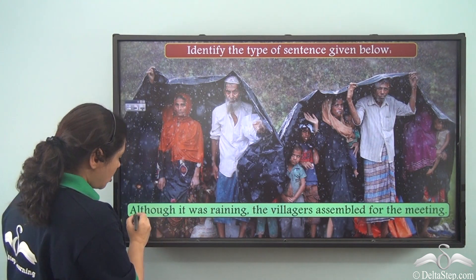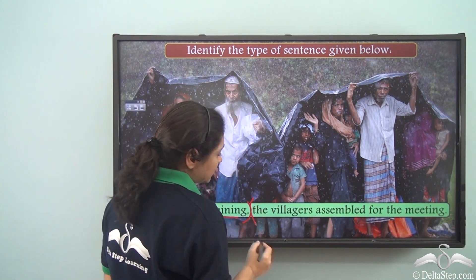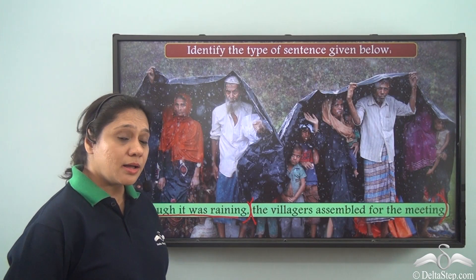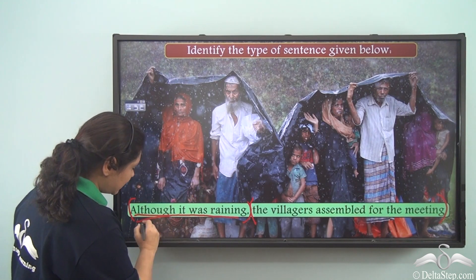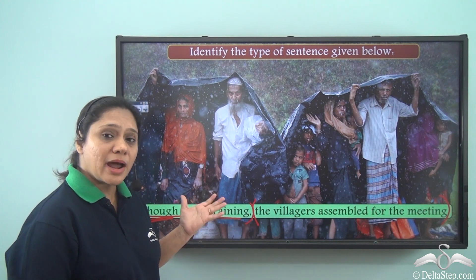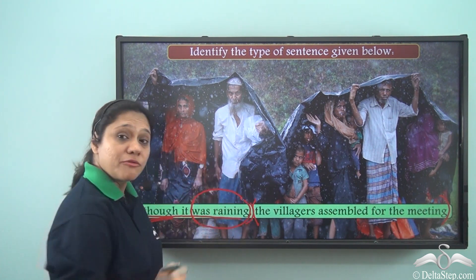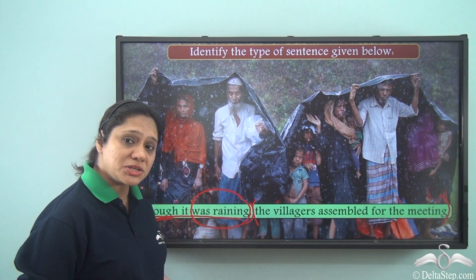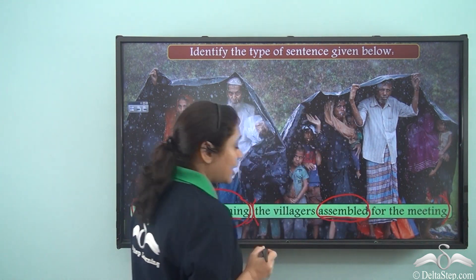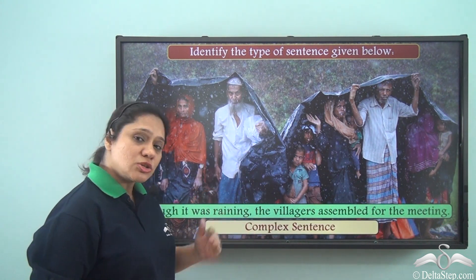Next sentence: 'Although it was raining, the villagers assembled for the meeting.' This is made up of two clauses. 'Although it was raining' is the subordinate clause, starting with the conjunction 'although.' 'The villagers assembled for the meeting' is the main clause. The finite verbs are 'was raining' and 'assembled.' So this sentence is also a complex sentence.